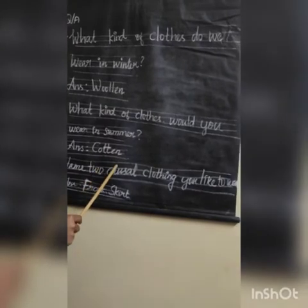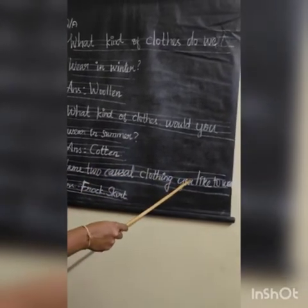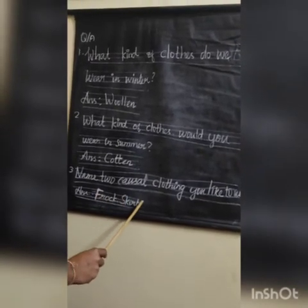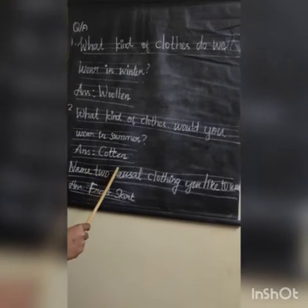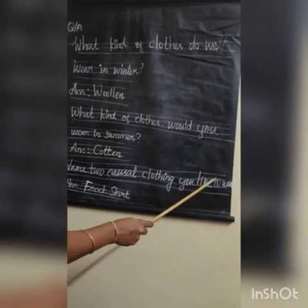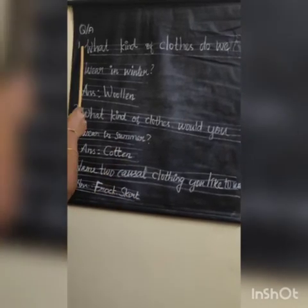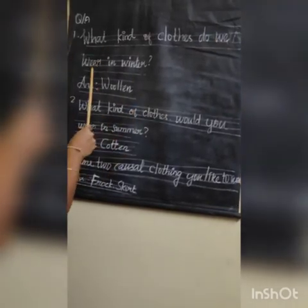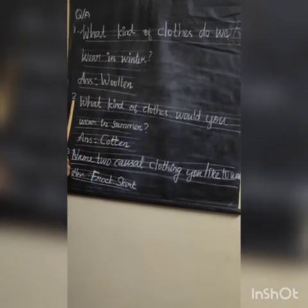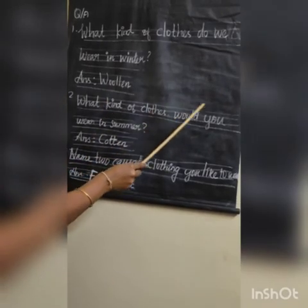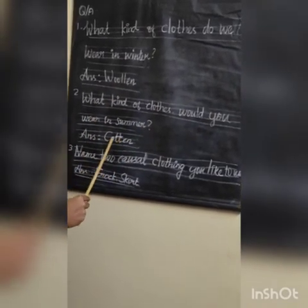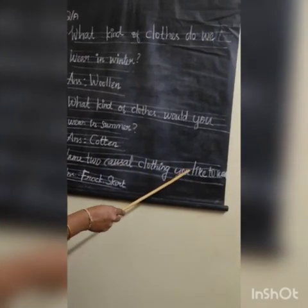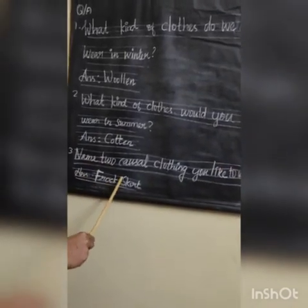Third question: Name two casual clothing you like to wear. Answer: frock and skirt. Name two casual clothing you like to wear — answer: frock and skirt.